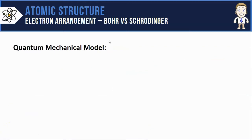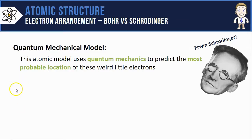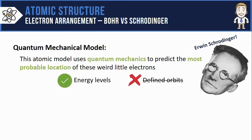That's where the quantum mechanical model comes in. Most chemists would agree this is the most accurate model for electron arrangement that we've got today. In this model, developed by Erwin Schrödinger, we use quantum mechanics — really complex math — to predict the most probable locations of these electrons. We can't put electrons in well-defined rings, but we can calculate where they are most likely to be found. This model keeps the idea of energy levels, which does turn out to be correct, but gets rid of the idea of well-defined orbits.